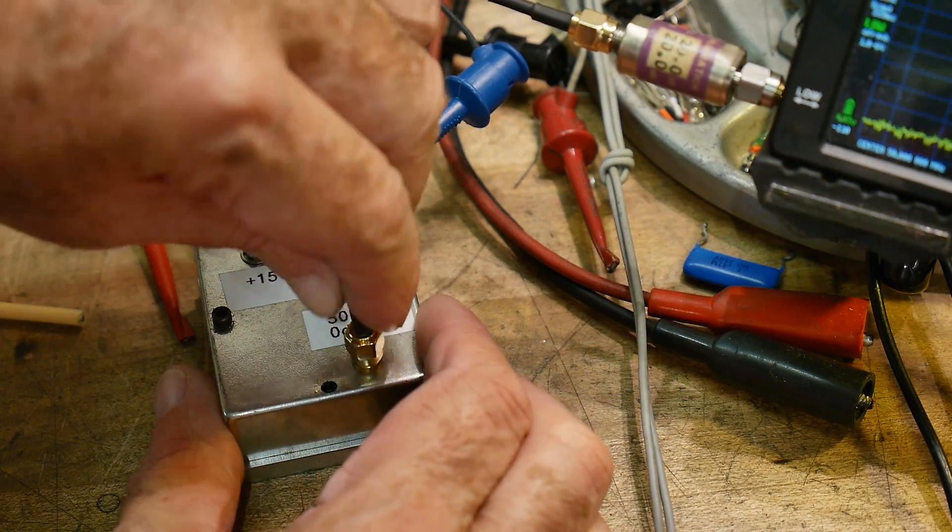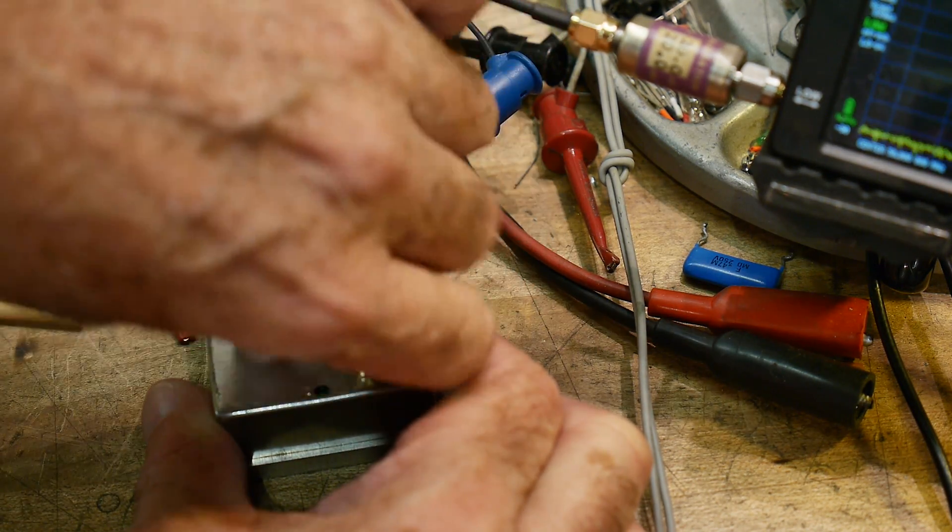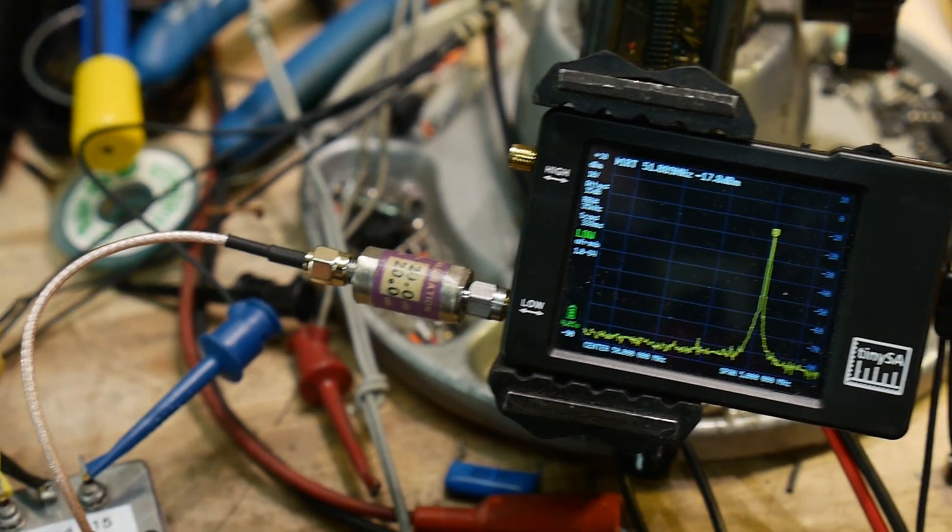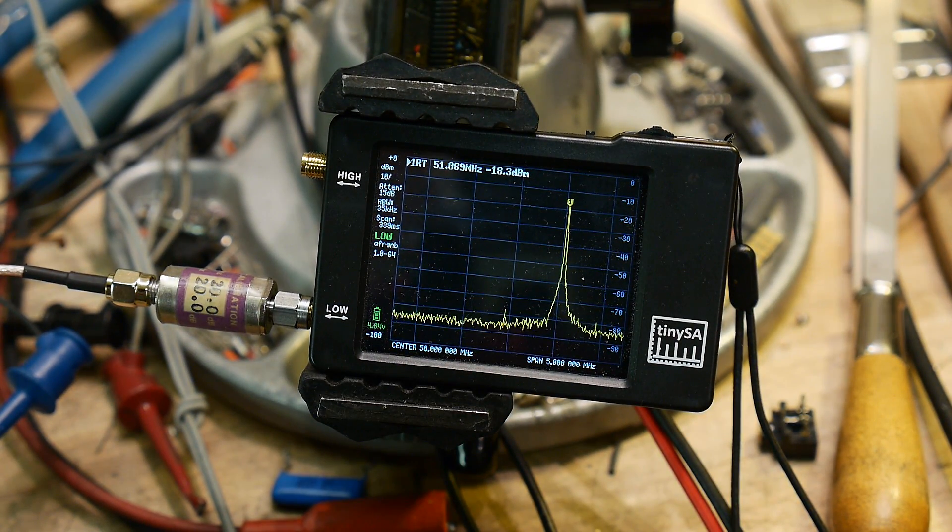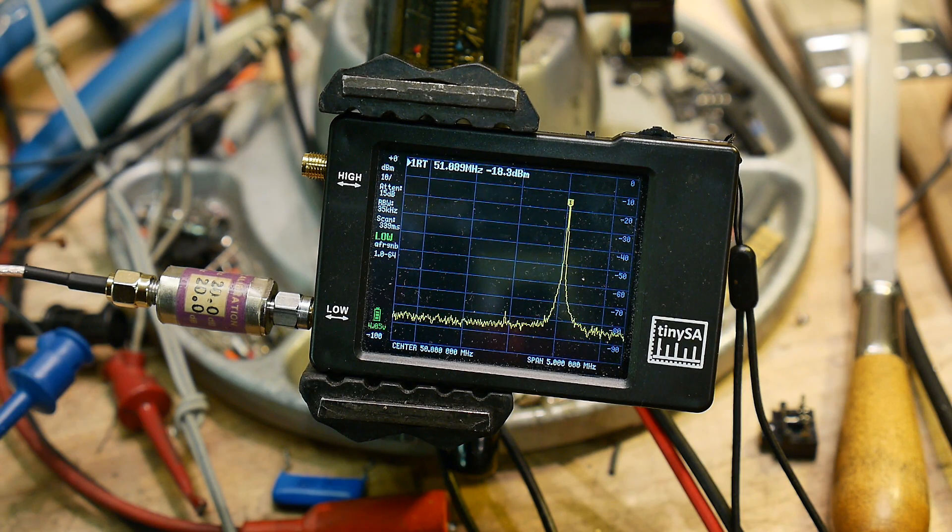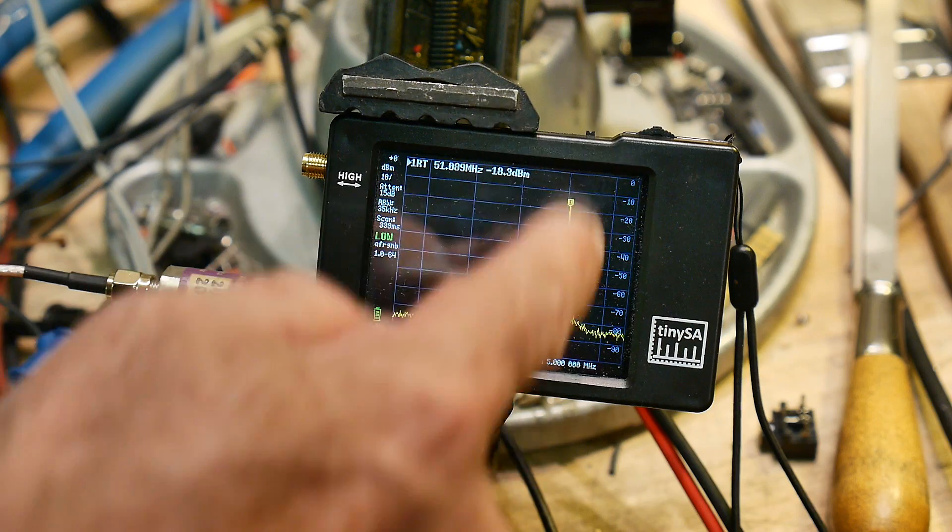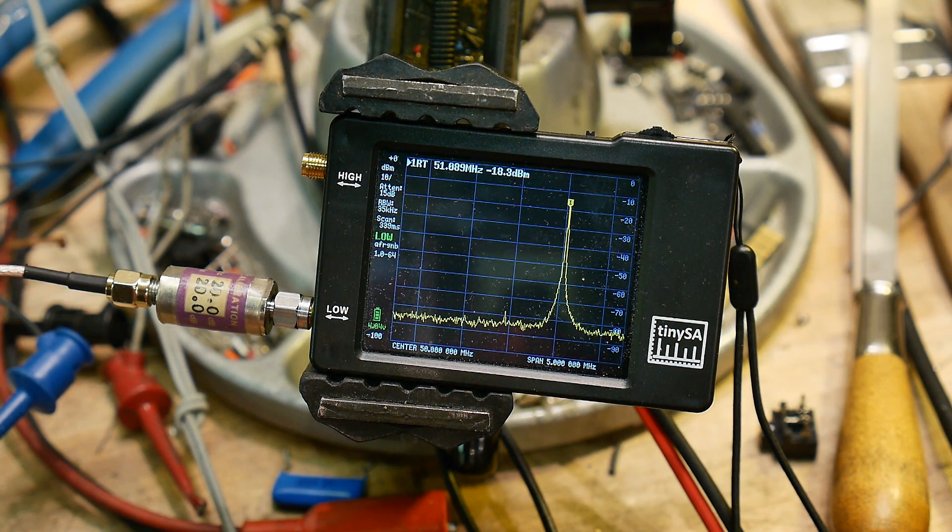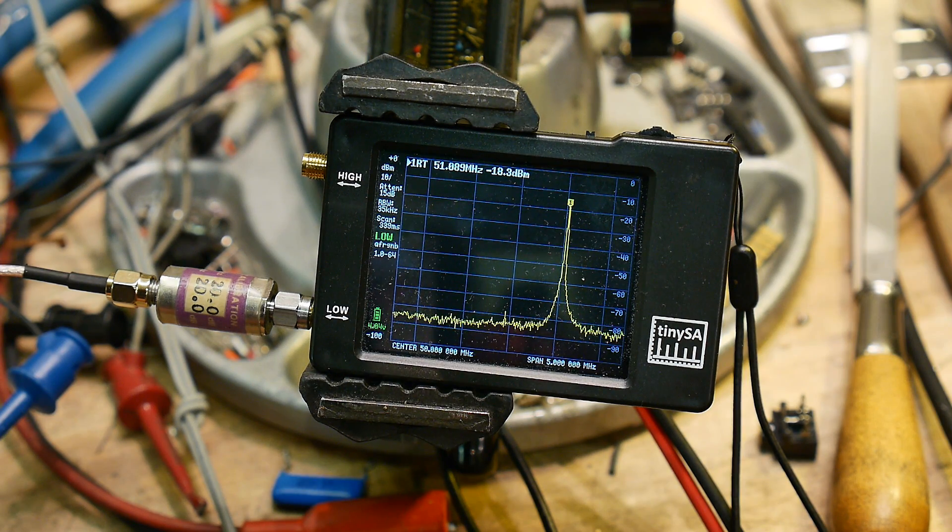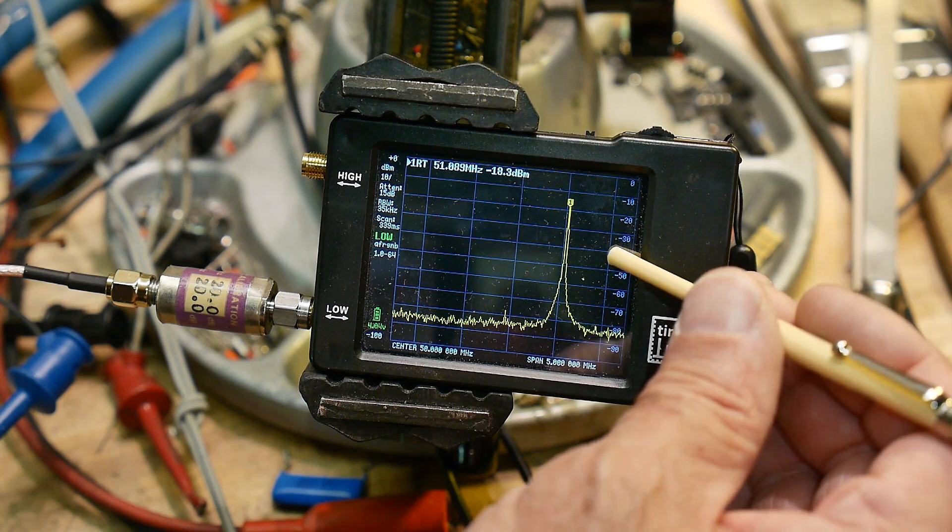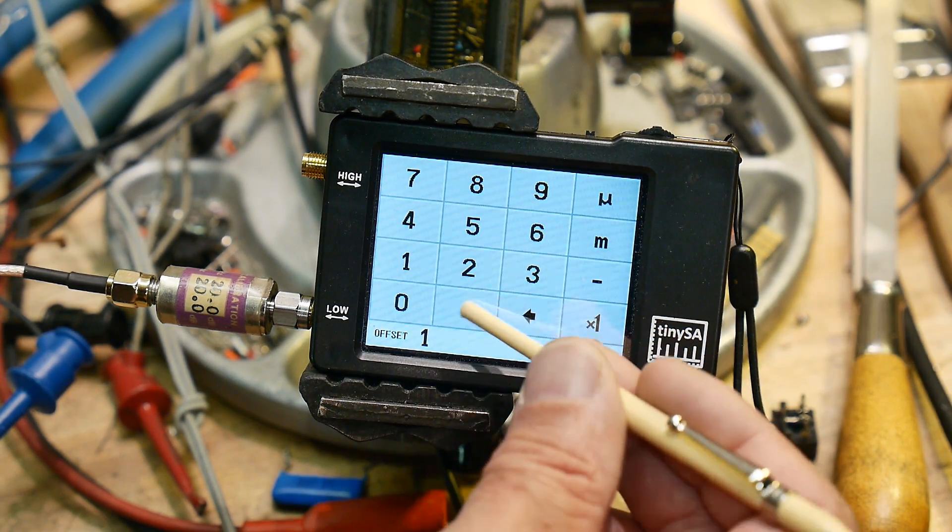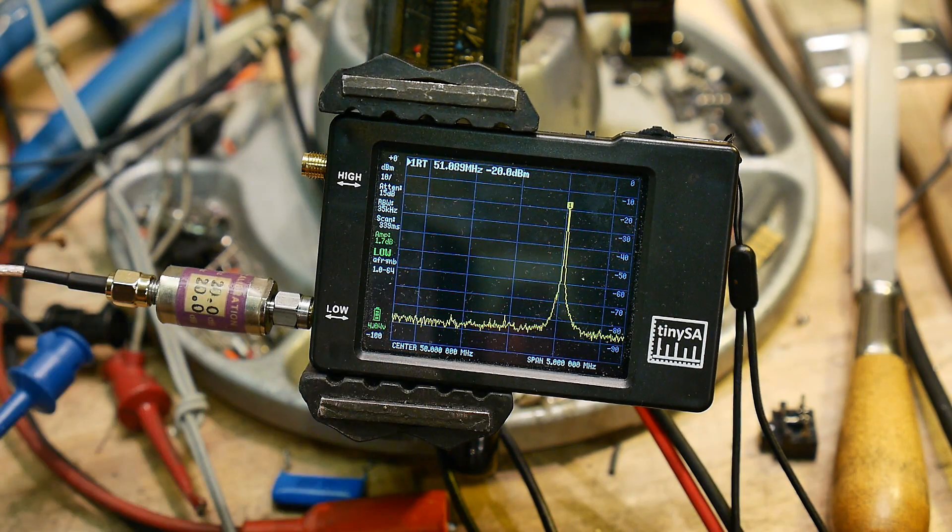All right, so let's hook up the calibrator. And I have the calibrator going into a 20 dB pad into the spectrum analyzer, and we're measuring minus 18.3. So it's fluctuating a little bit, but minus 18.3. And there you can see our 50 MHz carrier. So it is a bit off. We are about 1.7 dB off. So if we go to level external amp, and we put in 1.7, now we're measuring minus 20 dBm exactly.